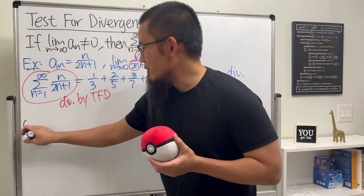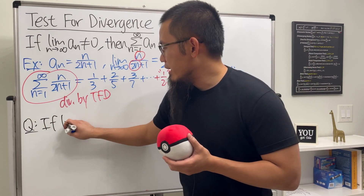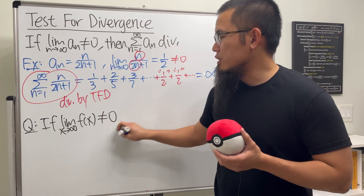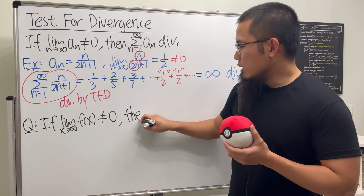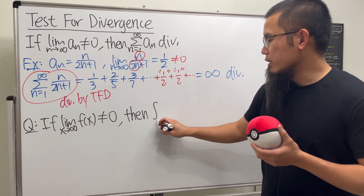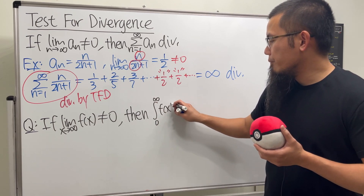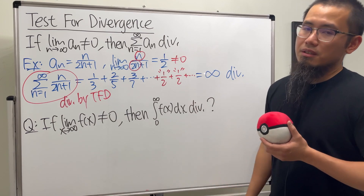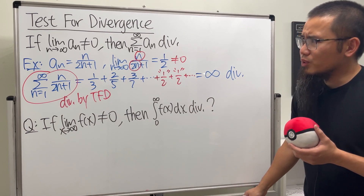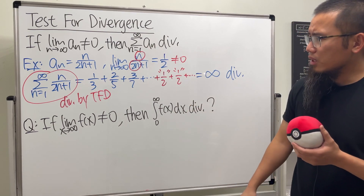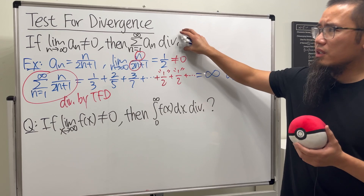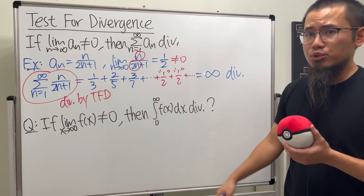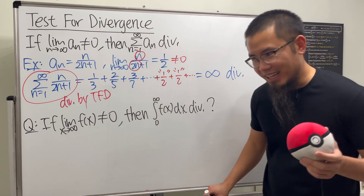So here's the question: if we take the limit as x goes to infinity of some function f(x) and this is not equal to zero, can we conclude that the improper integral from zero to infinity of f(x) diverges? We have an integral test connecting series and improper integrals, and we have the test for divergence for series — so this should be true, right? No, it's not.